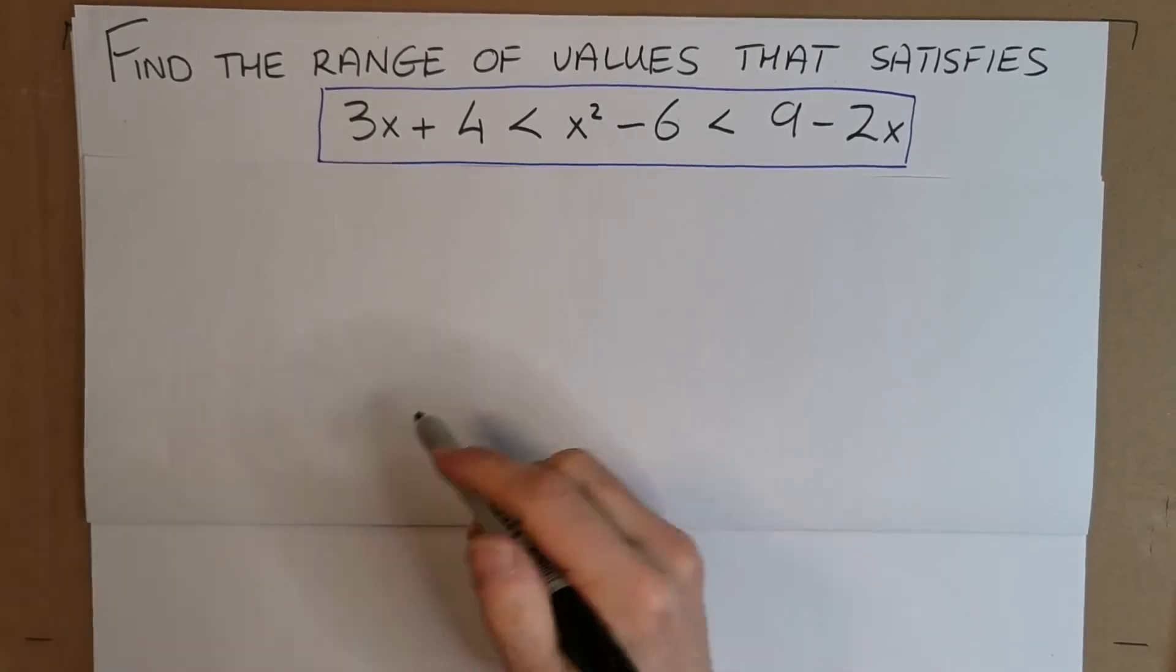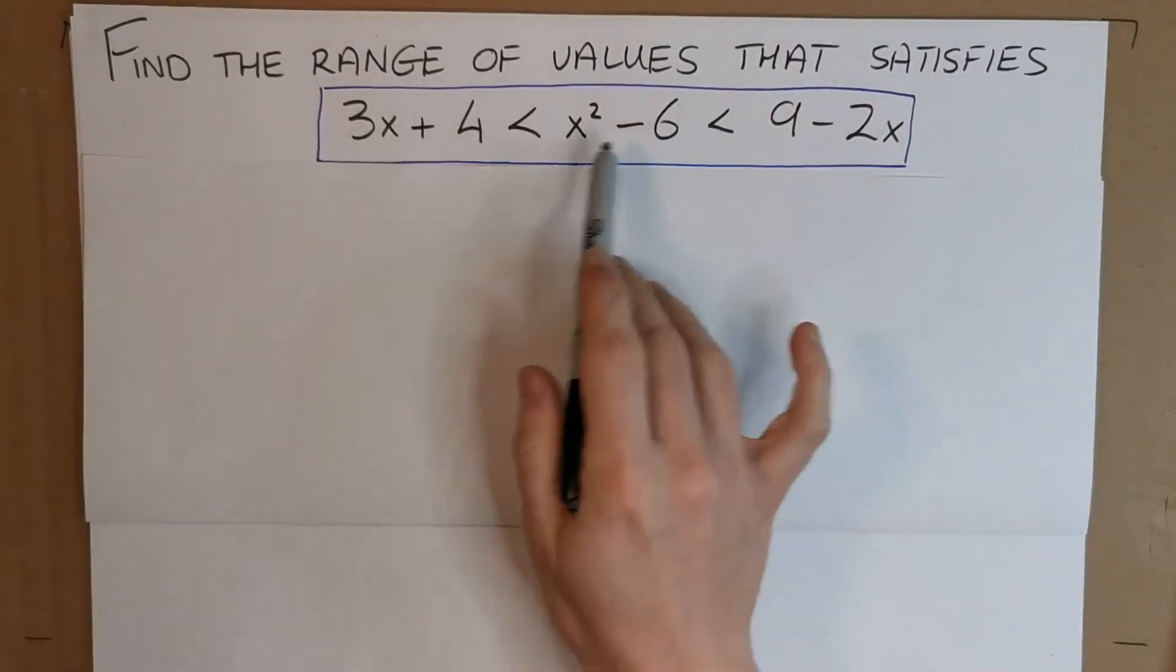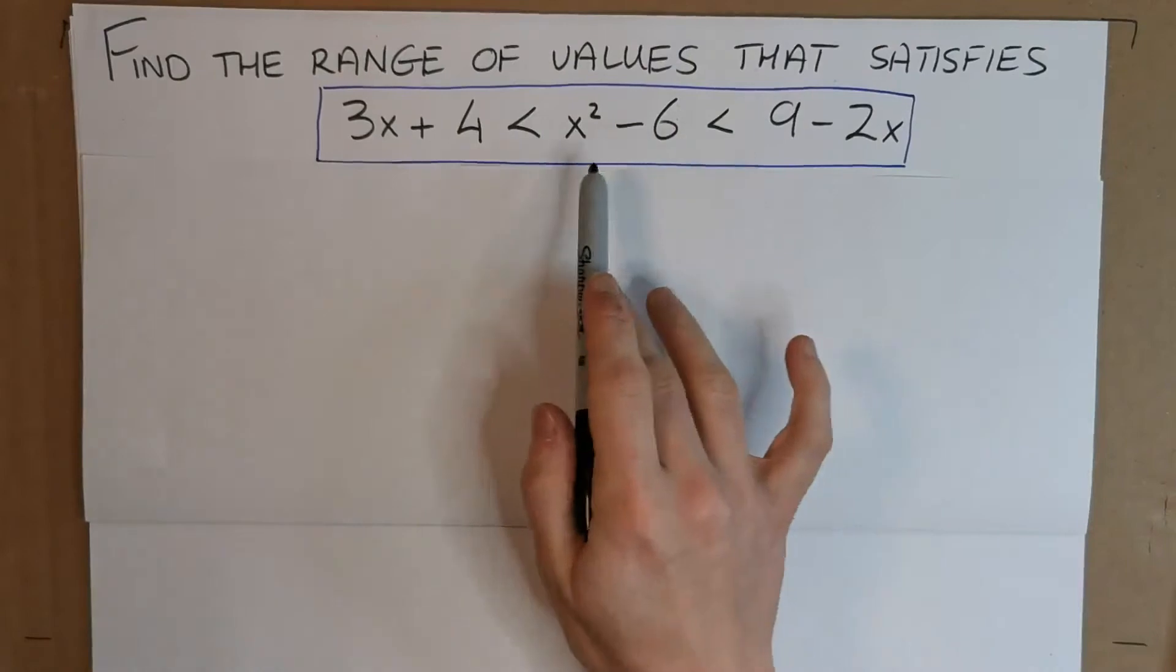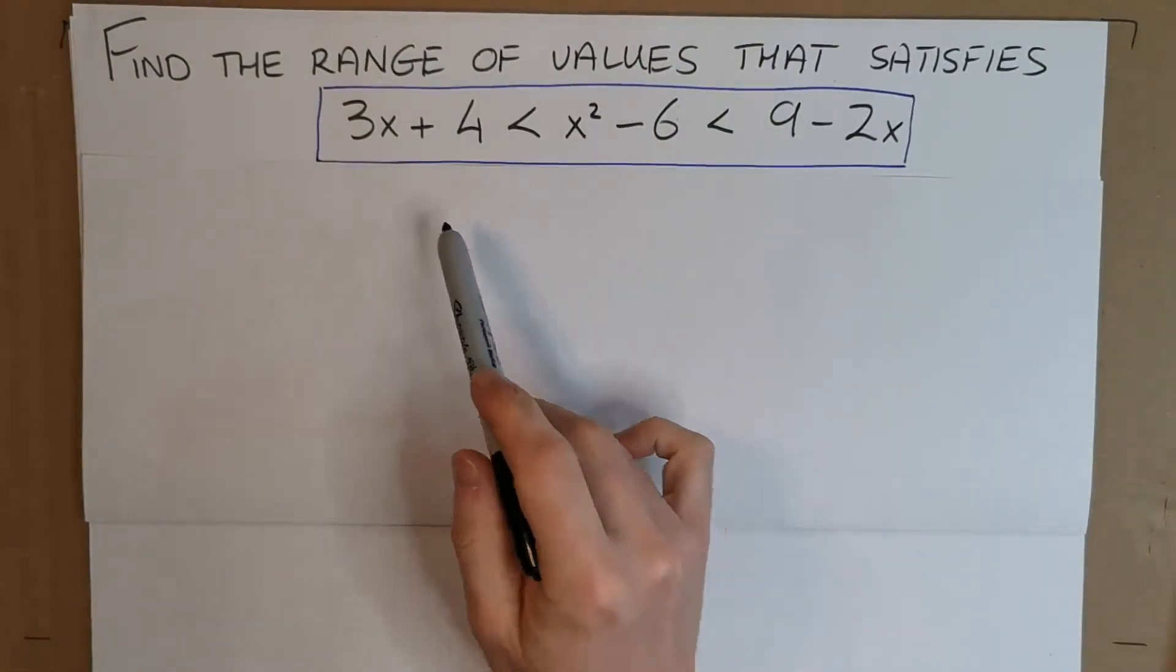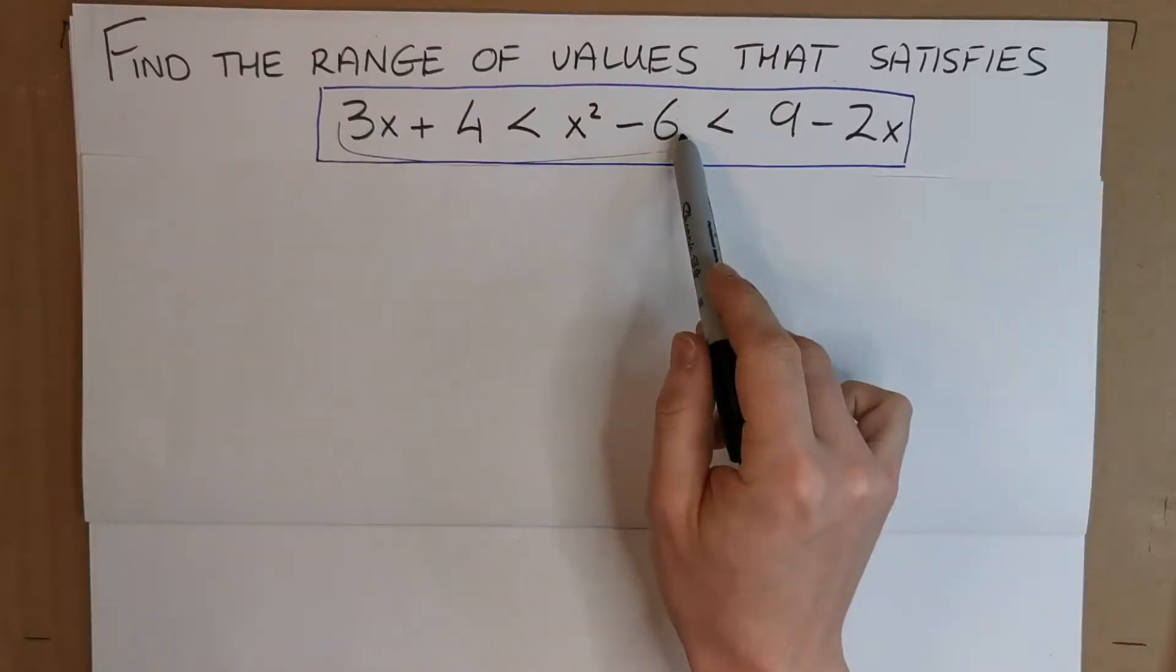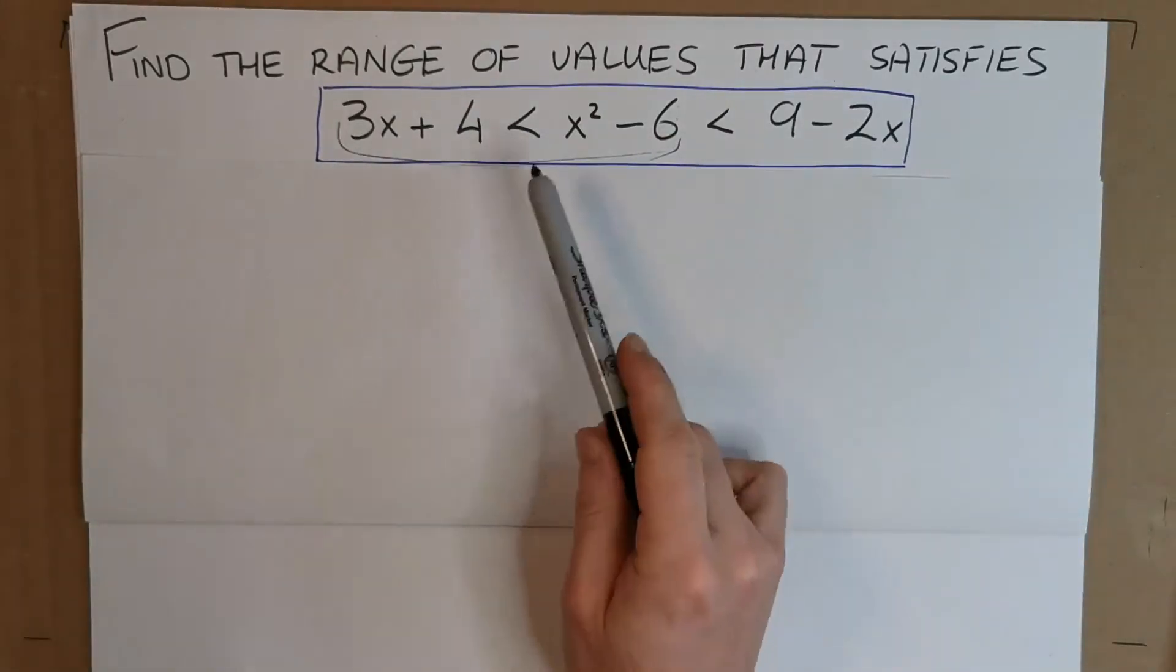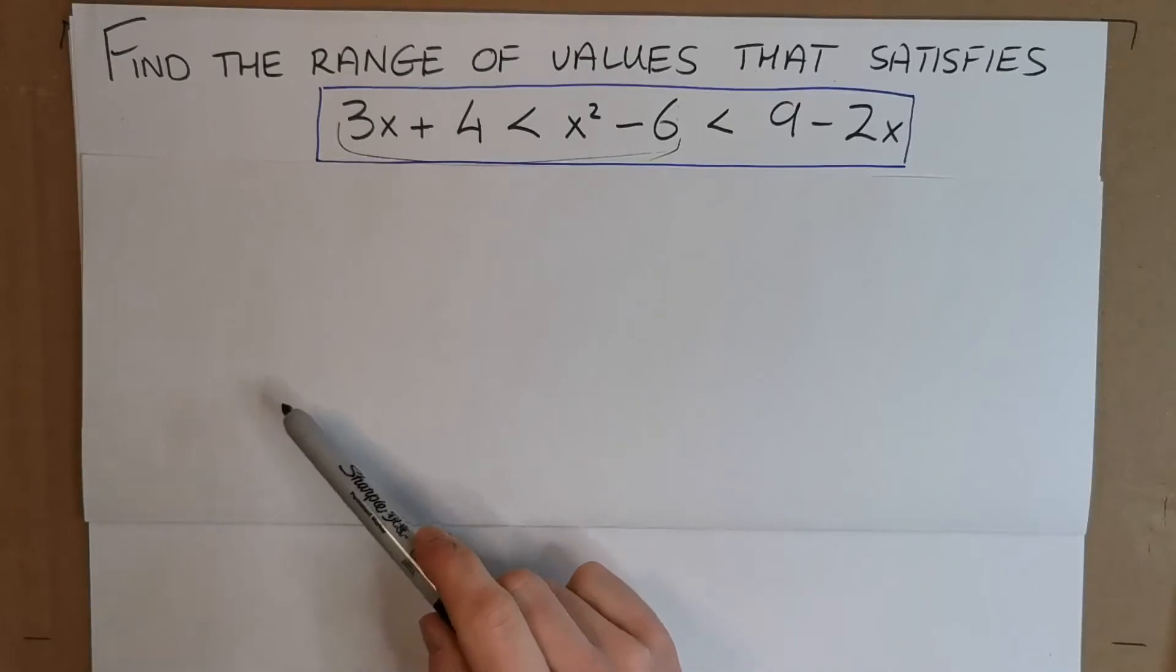So in this inequality, we've defined the range of values that satisfies this inequality here. It's like two inequalities matched together. We're used to doing these on a linear scale where we can take this left-hand side and then we can take this right-hand side, but now we have this quadratic expression in the middle.